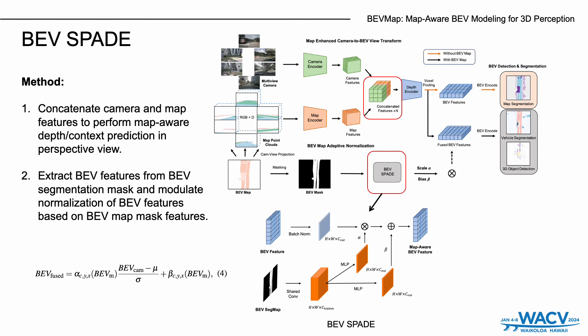In our method in detail, we extract camera and map features from separate CNN encoders and concatenate them channel-wise, which are used to perform map-aware depth context prediction in perspective view. With the obtained depth, the perspective view features are projected onto BEV space through the SPLAT stage. We also leverage the BEVMAP mask to modulate road context of BEV features by extracting channel-wise scale and bias terms for normalizing BEV features. This module is named BEV SPADE.